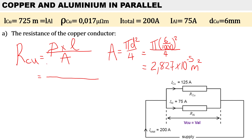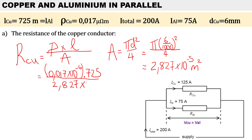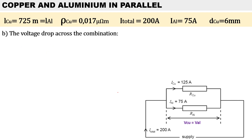Remember the resistivity must be in ohm-meters, so we multiply by 10 to the power of minus 6 to convert micro-ohm-meters to ohm-meters. The length is 725 meters and the area is 2.827 times 10 to the power of minus 5. Therefore the resistance for copper is 0.436 ohms.